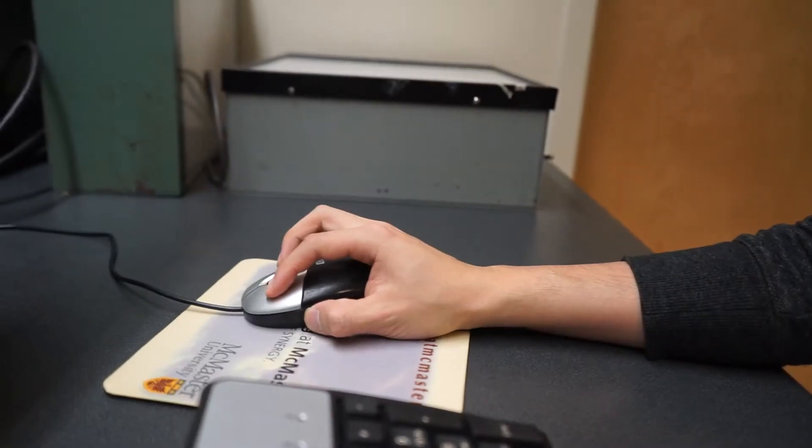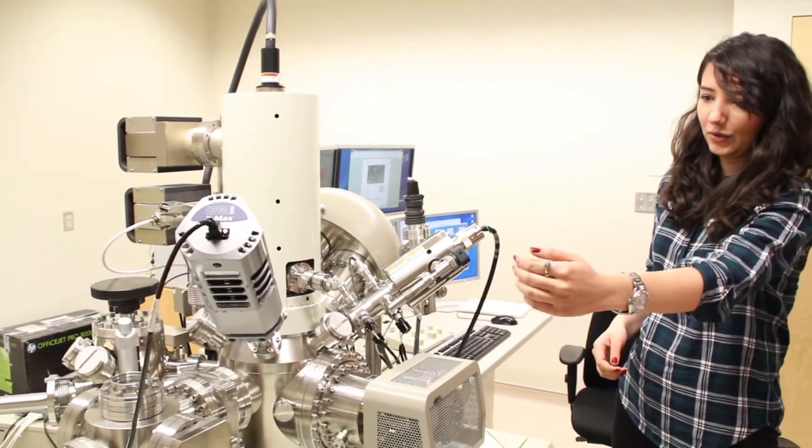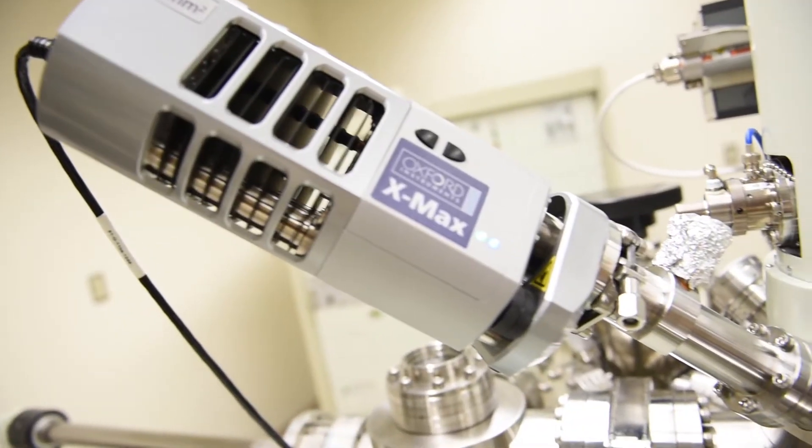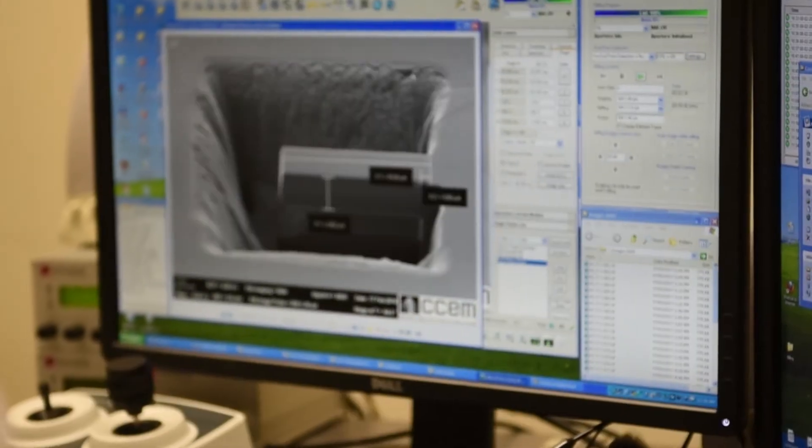We also have three SEMs, scanning electron microscopes. We have a very high resolution microscope for doing low voltage work. We also have a surface analysis machine, an Auger, and we have a FIB, a focused ion beam instrument, which is excellent for preparing samples.